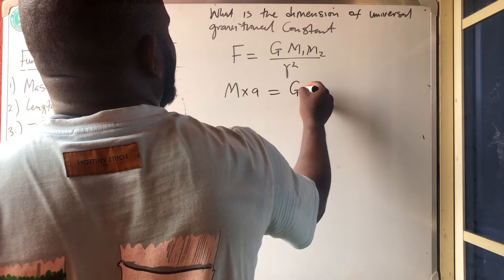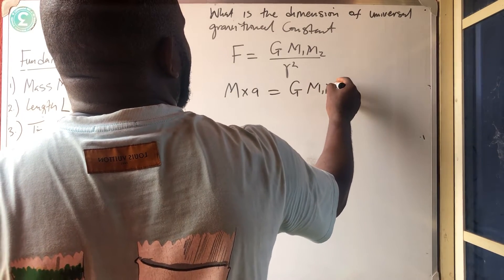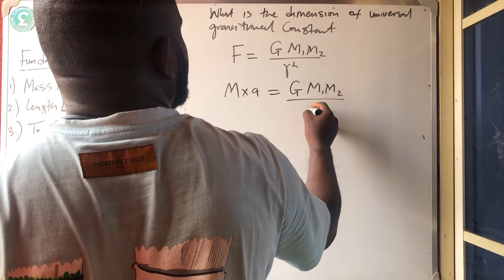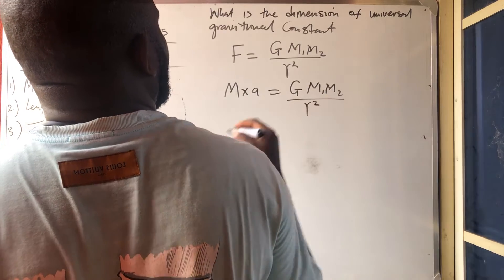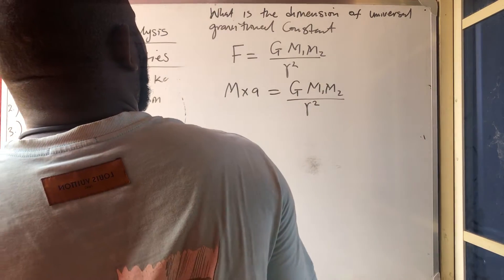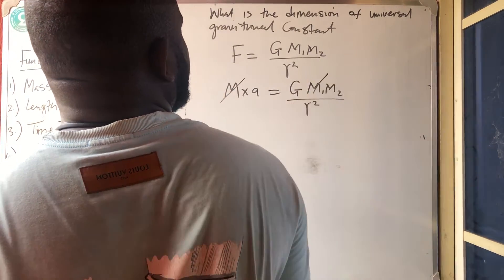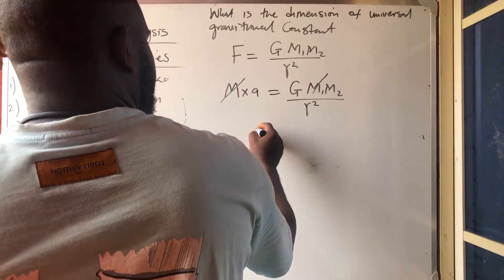Which is equal to G, M1, M2, all over what? R squared. So, one of this M, she even counts one of this M. So I'm having that what? That's acceleration.